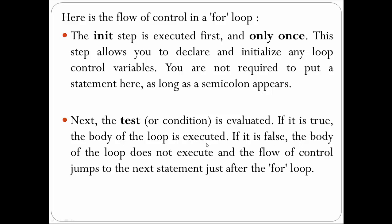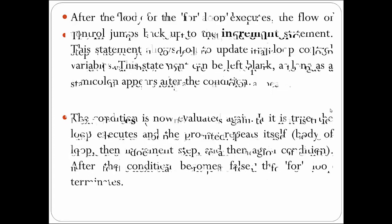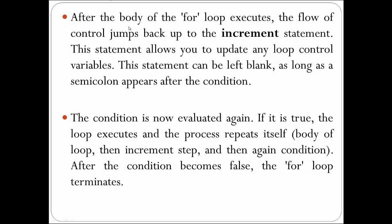If the condition is true, the body of the loop is executed. If it is false, the body of the loop does not execute and the flow of control jumps to the next statement just after the for loop. After the body of the for loop executes, the flow of control jumps back to the increment statement. This statement allows you to update any loop control variables, and it can be left blank as long as a semicolon appears after the condition.